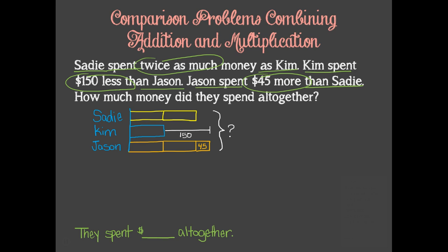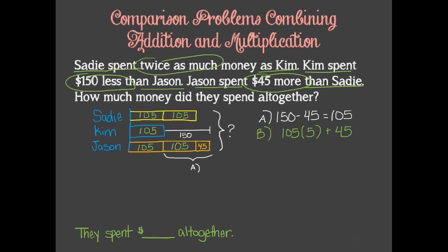Now we are ready to let our model drive the math. Since we know that this piece here totals $150, because it is the difference between what Kim and Jason spent, we can subtract $45 from $150 to find the remaining piece here equals $105. We can go ahead and write that in. Now, since we know that the rest of the units are the same size as the $105 we just figured out, we can write those amounts in too. Our last step is to add all the units together. We have five same size units representing $105 plus the $45 on Jason's bar. That makes $525 plus $45, which equals $570. They spent $570 altogether.